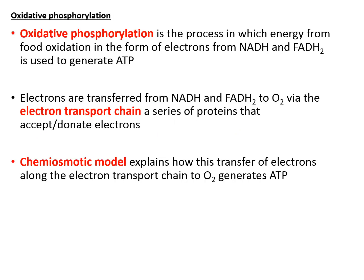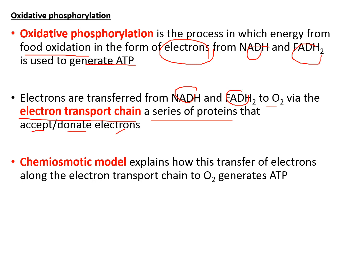Oxidative phosphorylation refers to the process by which energy from food oxidation, in the form of high energy electrons, is used to generate ATP. We have captured those high energy electrons in the form of NADH and FADH2. Therefore, you have the flow of electrons from both NADH and FADH2 to oxygen via the electron transport chain, which is a series of proteins that can either accept or donate electrons.